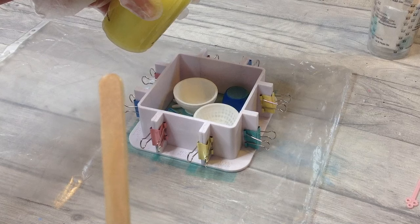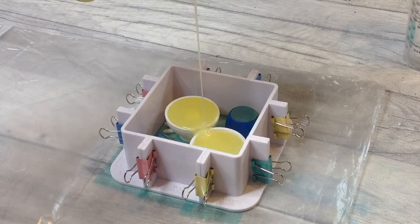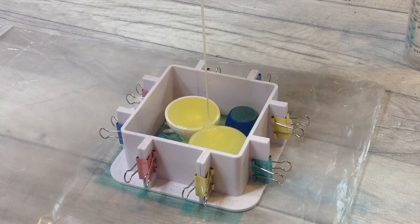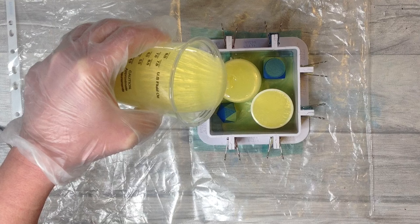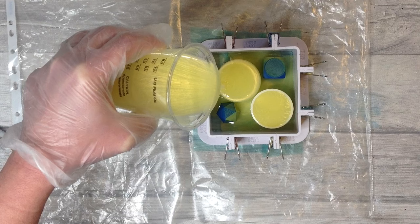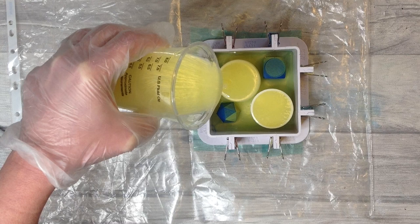Once the silicone mould mixture is fully combined, we can take it and very gently pour it into our mould housing. Pouring a nice thin and steady stream works best. I always use this particular silicone kit and I'll put all the links in the description below. It combines really well and pours really easy and really is bubble free.